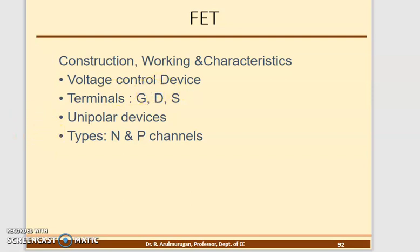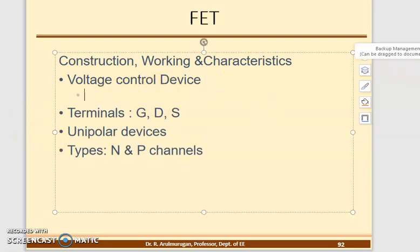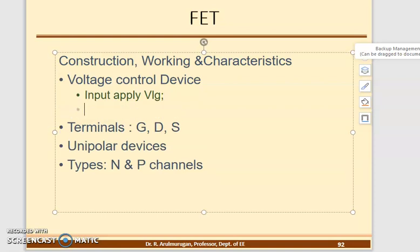Why is it called a voltage control device? Because the input is a voltage phenomenon — you are going to apply a voltage as input. Based on the variation of the voltage value, the output resistance varies, turning the output on and off. That is why it is called a voltage control device.